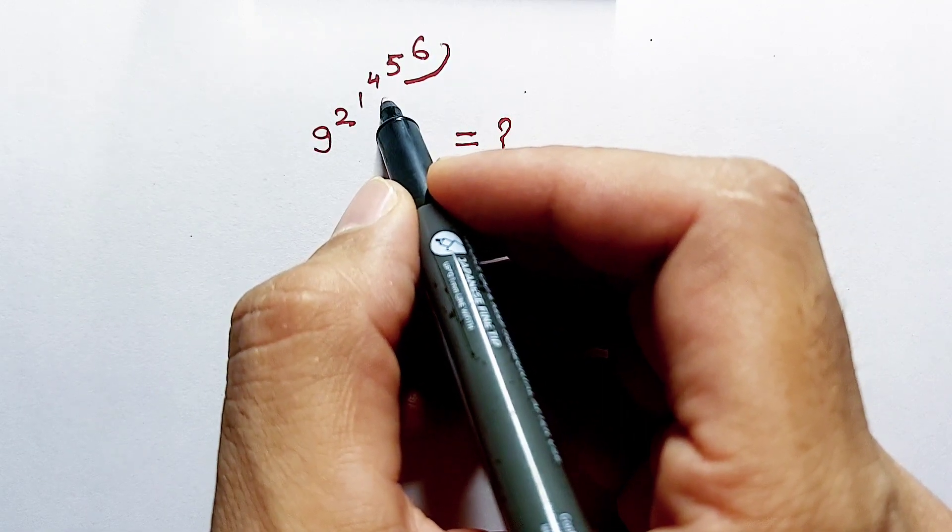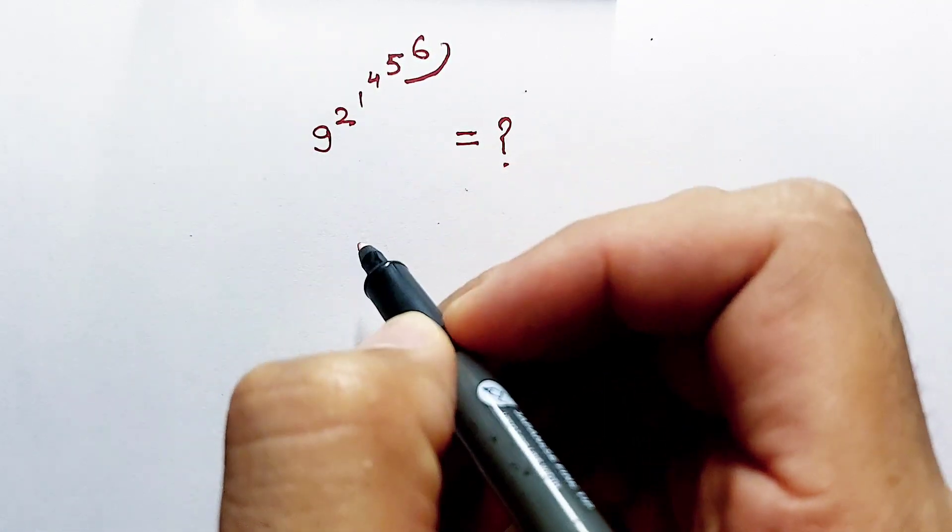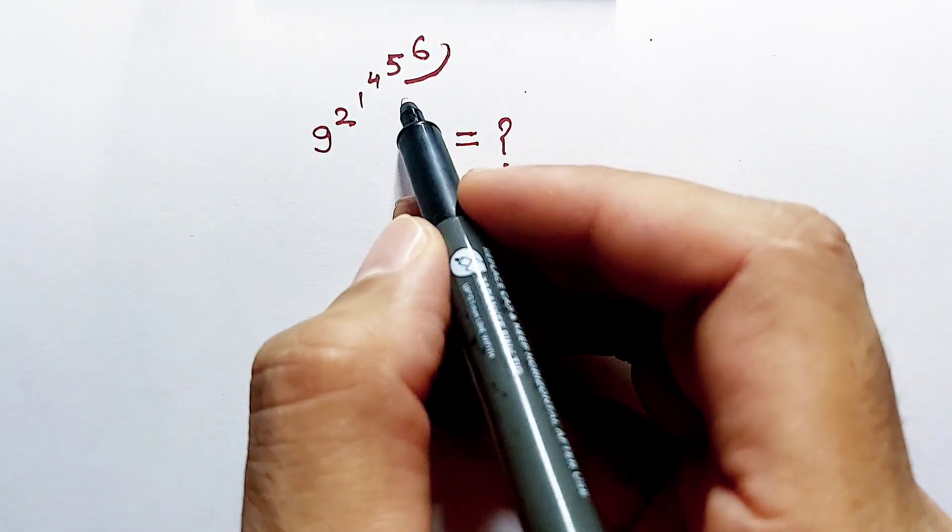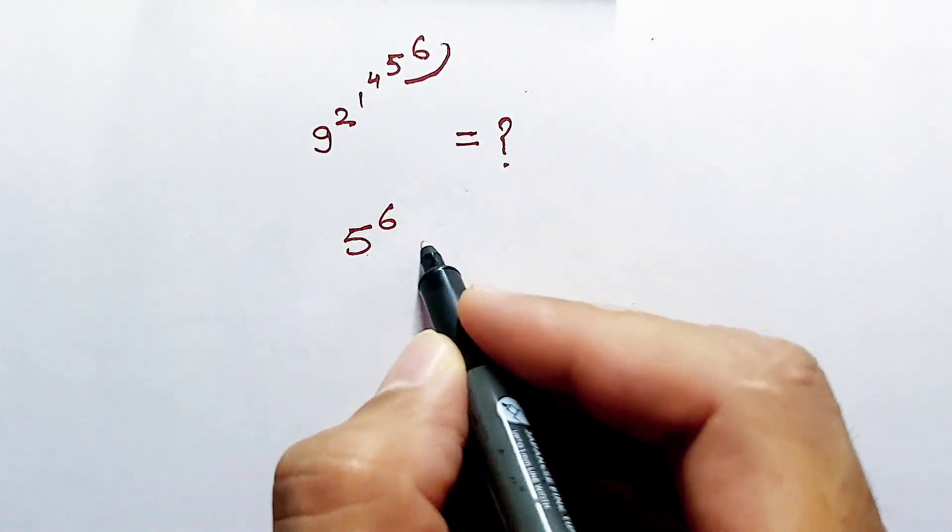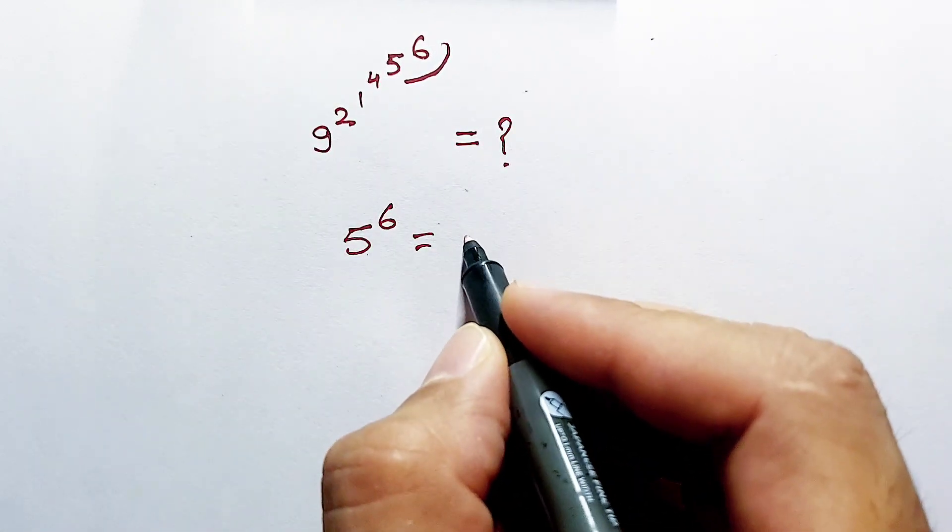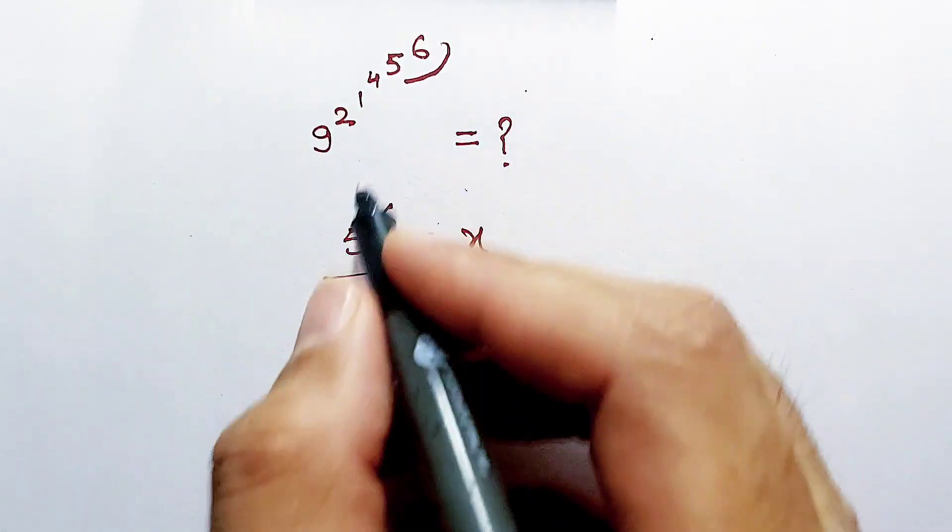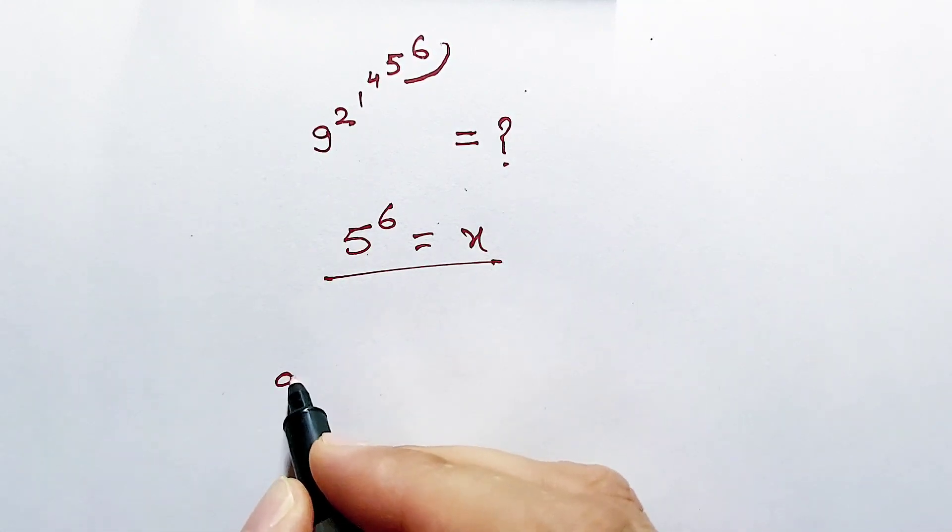If we solve this 5 power 6 and we get a number, let's assume that number is x. So our question will look like this.